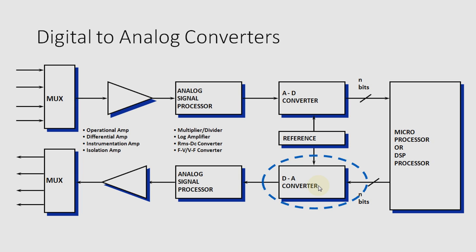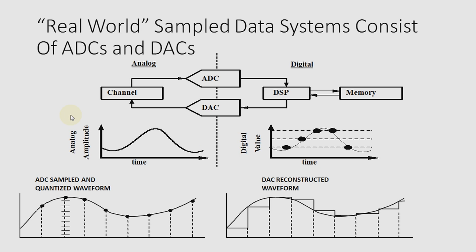The output digital signal then goes to the DA converter, where it is converted back into an analog signal. This analog signal goes again through the analog signal processor, then through the operational amplifier, and then back to the multiplexer — here used as a demultiplexer — where a single input is applied and multiple outputs are received.